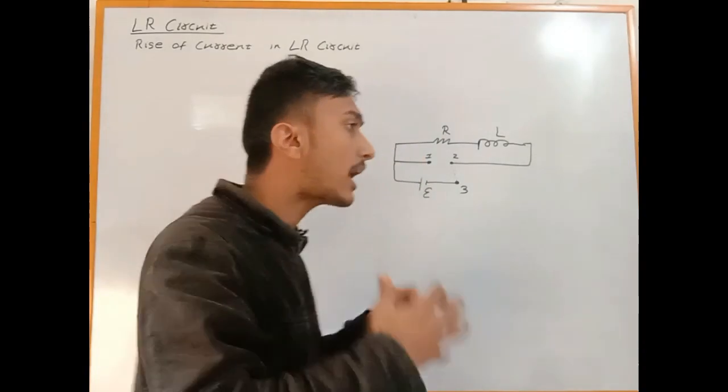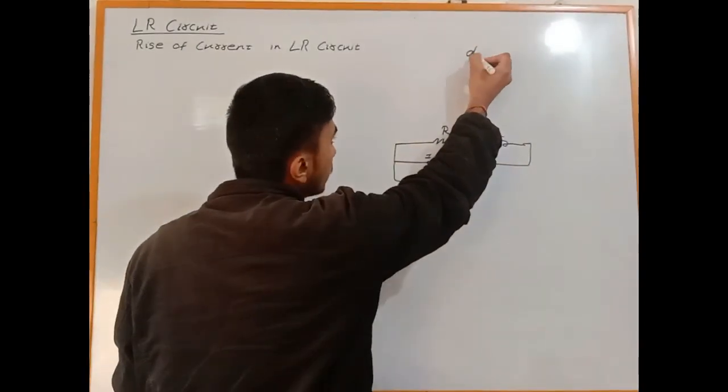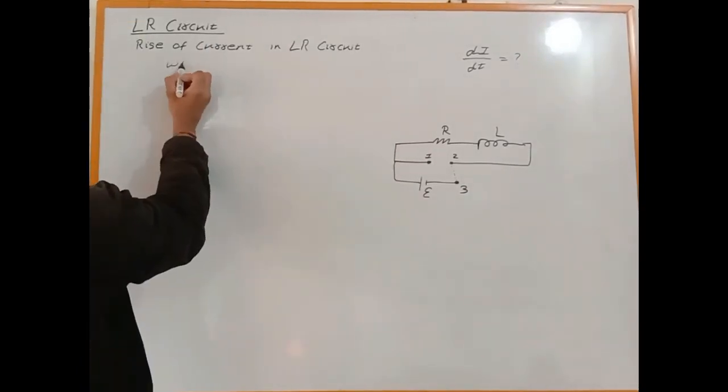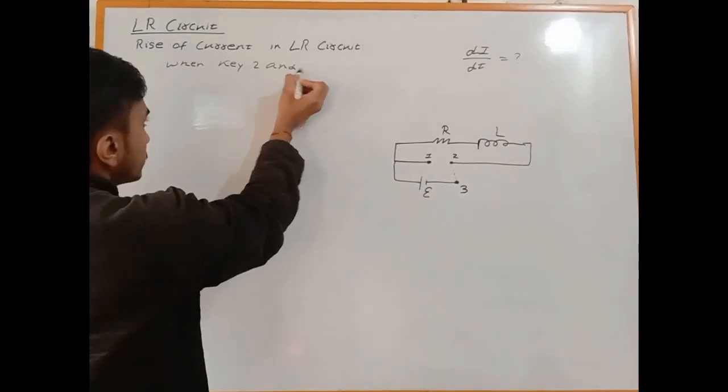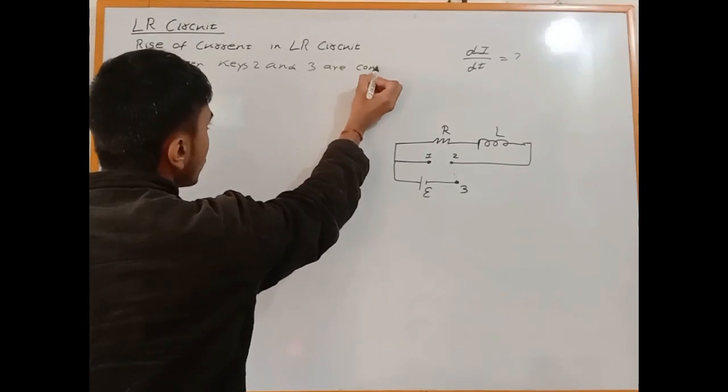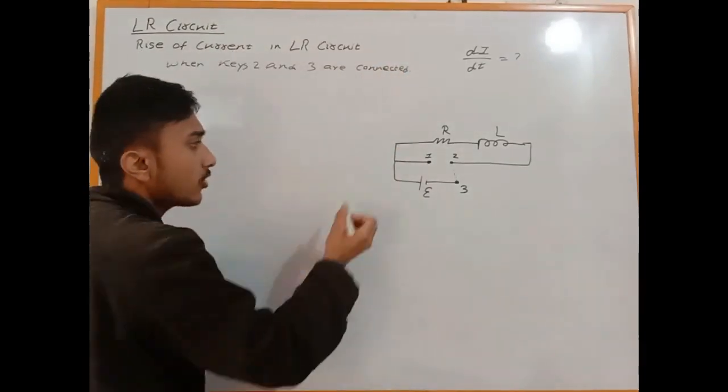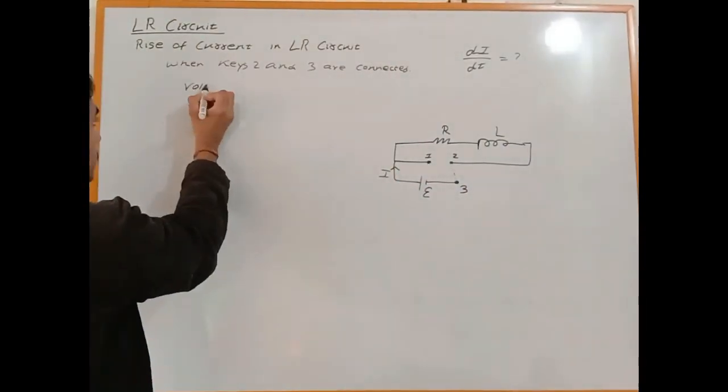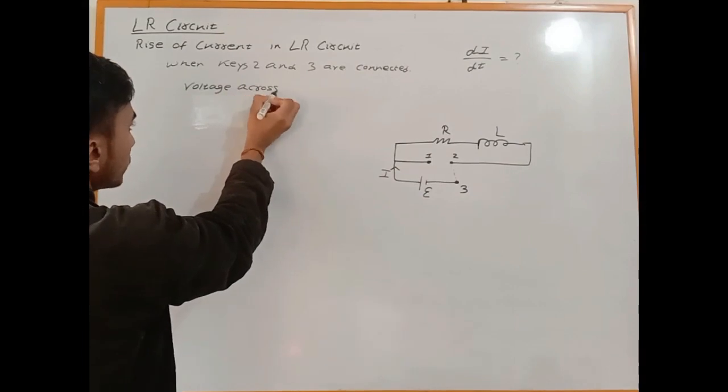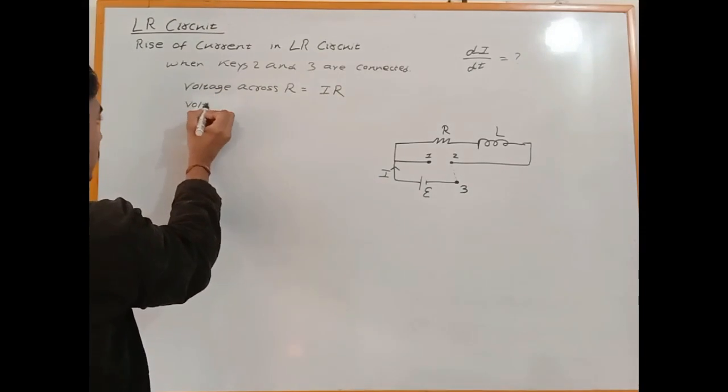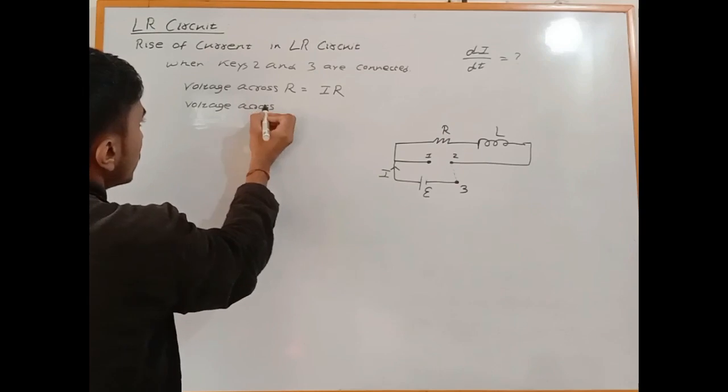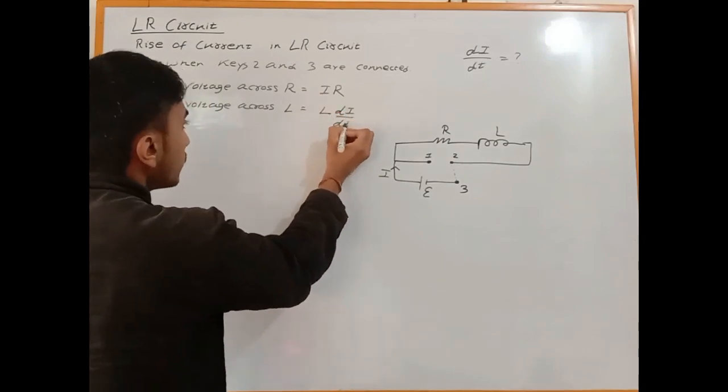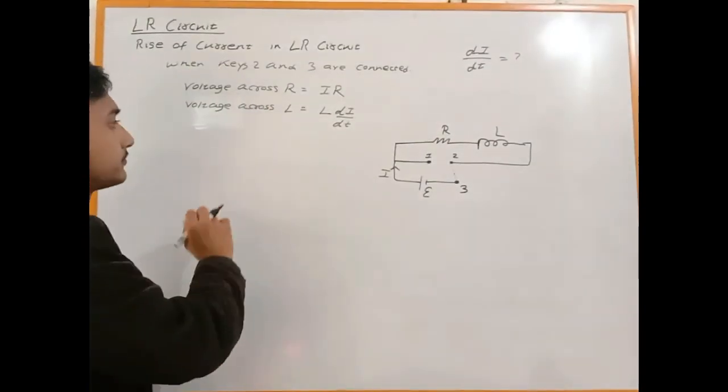We need to calculate the rise of current with respect to time, so we'll calculate dI/dt and find the relation. The voltage across the resistor is I times R, and the voltage across the inductor is L times dI/dt, where L is the self-inductance.